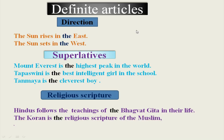We know very well that there are four directions: east, west, north, and south. We use the definite article before the names of directions. 'The sun rises in the east. The sun sets in the west.' East and west are definite directions, so we use the definite article.